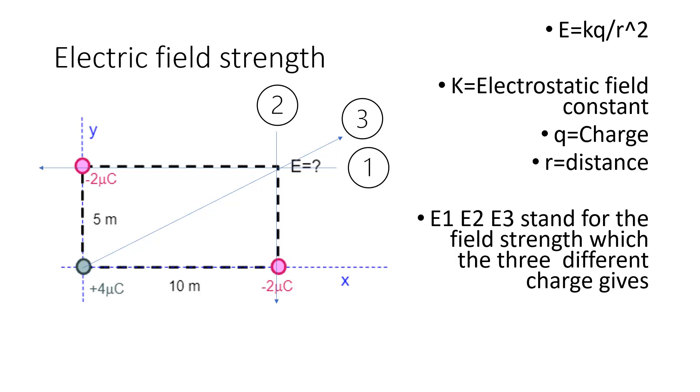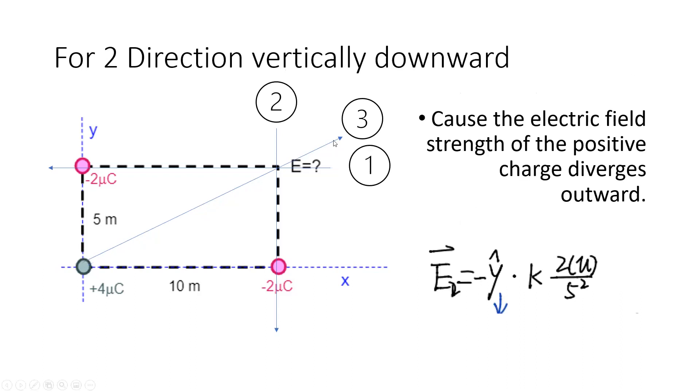In this slide, you can see the E field direction pointing downward. Why is that? Because the charge is negative, the E field points toward the minus 2 micro coulomb charge.